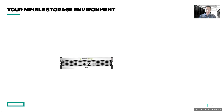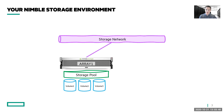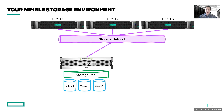Let's first build out the environment. Here's your Nimble storage array, and inside every Nimble storage array you've got a storage pool, and within that pool you allocate space for your volumes. You're connected to a storage network — that could be Fiber Channel or iSCSI — and you'll have hosts in your environment as well. These could be virtual hosts like ESXi or Hyper-V, or physical hosts connected to the array.